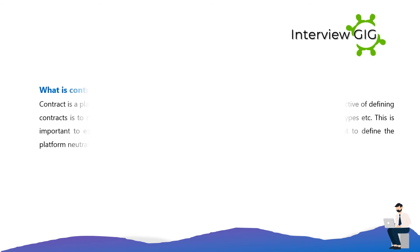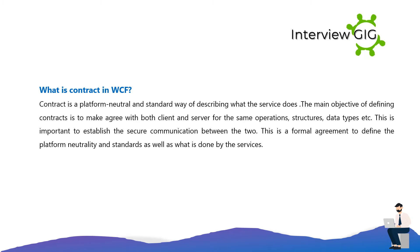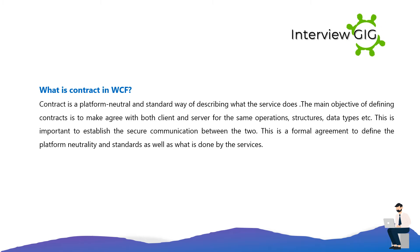A contract is a platform-neutral and standard way of describing what a service does. The main objective of defining contracts is to make both client and server agree on the same operations, structures, and data types. This is important to establish secure communication between the two, and is a formal agreement to define platform neutrality and standards as well as what is done by the service.